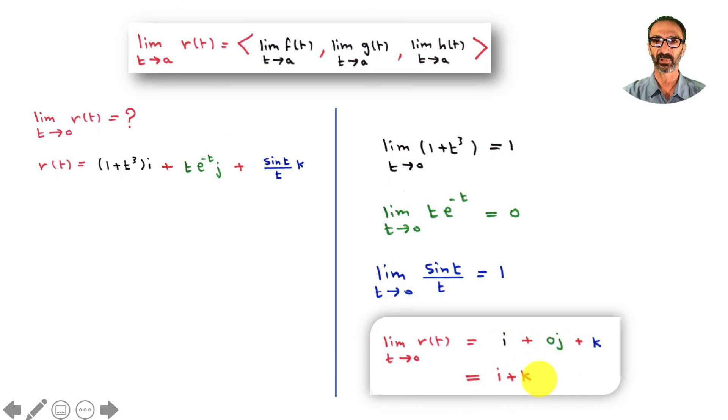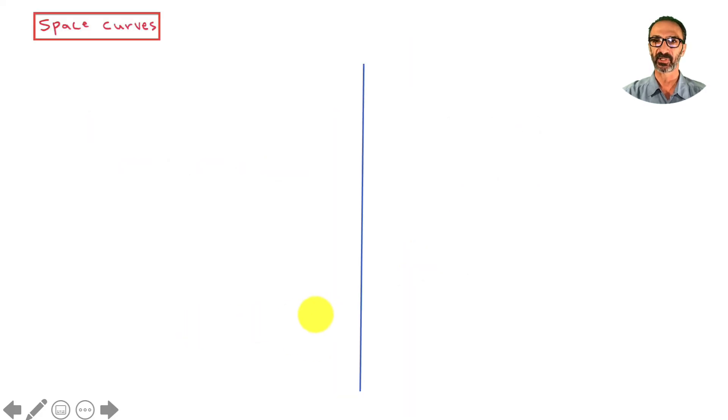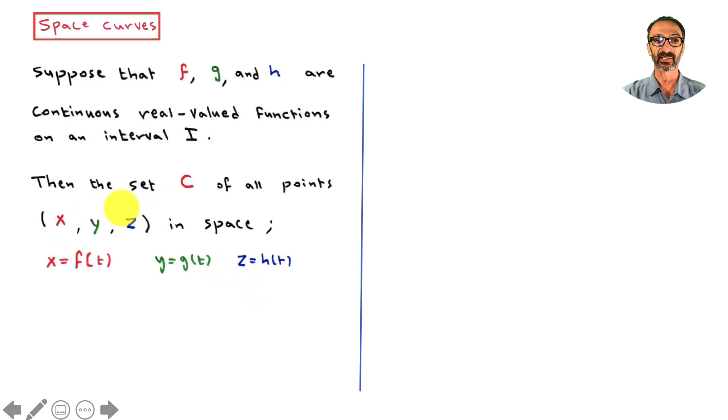Now the second part of the lecture is space curves. Suppose that f, g, and h are continuous real-valued functions on an interval I. Then the set C of all points (x, y, z) in space, where x = f(t), y = g(t), and z = h(t), and t varies throughout the interval I, is called a space curve.